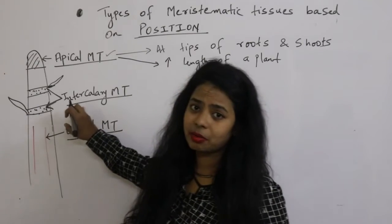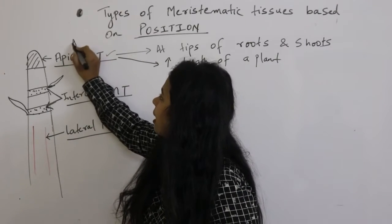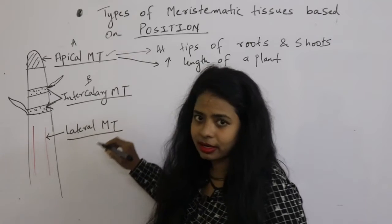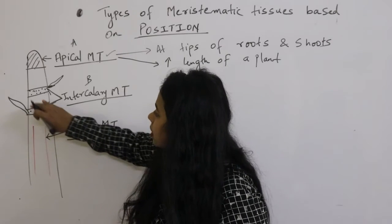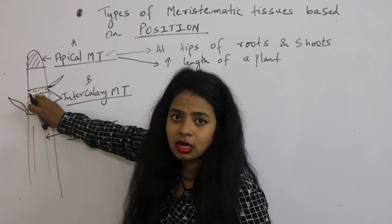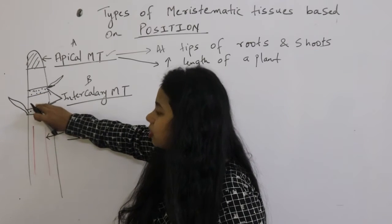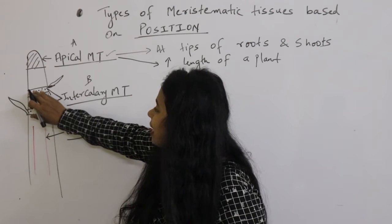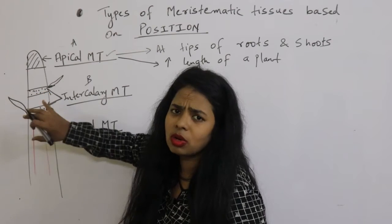Next, what is intercalary meristematic tissue? First is apical, second is intercalary. It is present at the base of the node, at the top of the internode. So it is present at the base or at the top of the node.